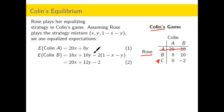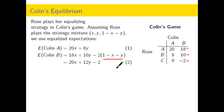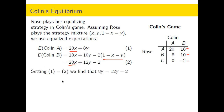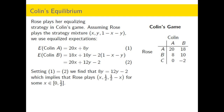We calculate the expected value of Colin A, which is 20X plus 8Y plus 0 times whatever, and the expected value of Colin B, which is 18X plus 10Y minus 2 times the quantity (1 minus X minus Y). When we set equations 1 and 2 equal, the 20X terms cancel, and we can solve for Y: Y equals 1/2. X can be anything in the closed interval from 0 to 1/2.